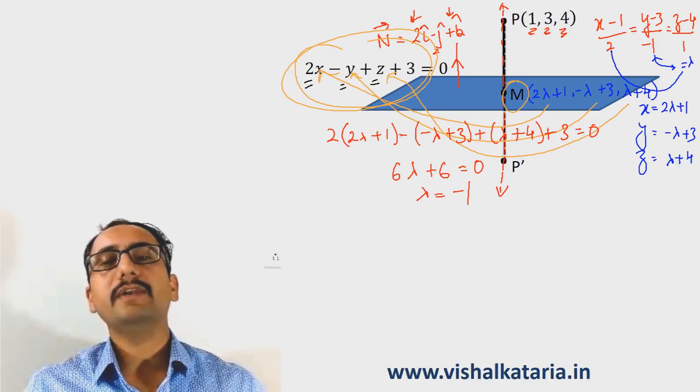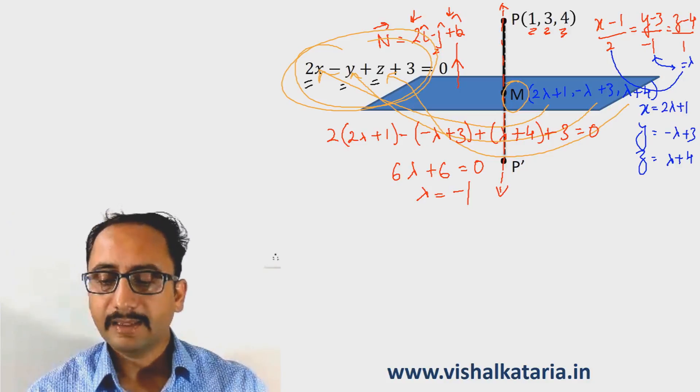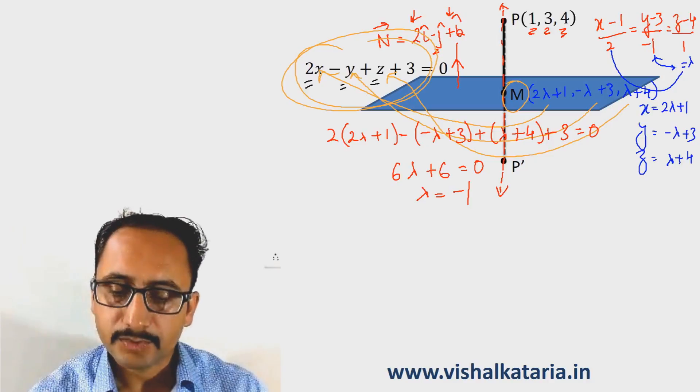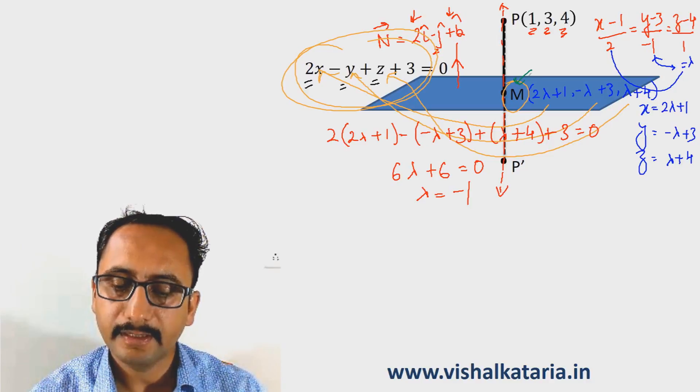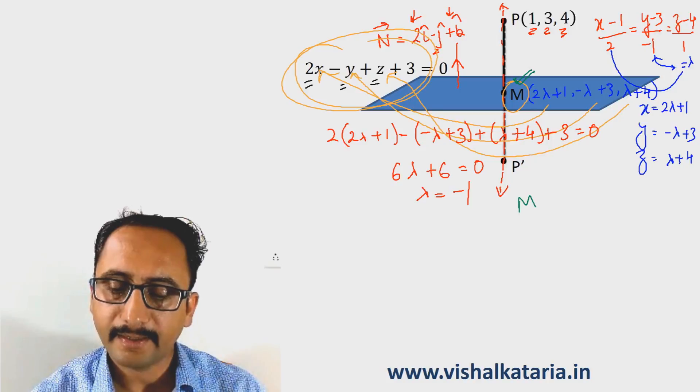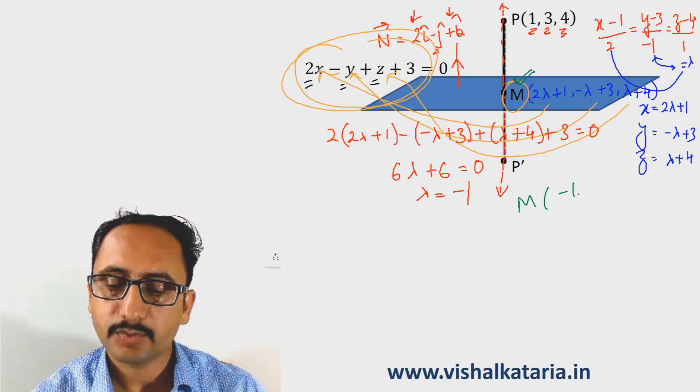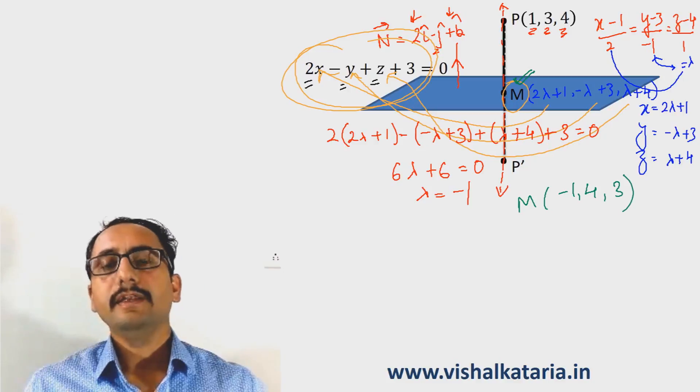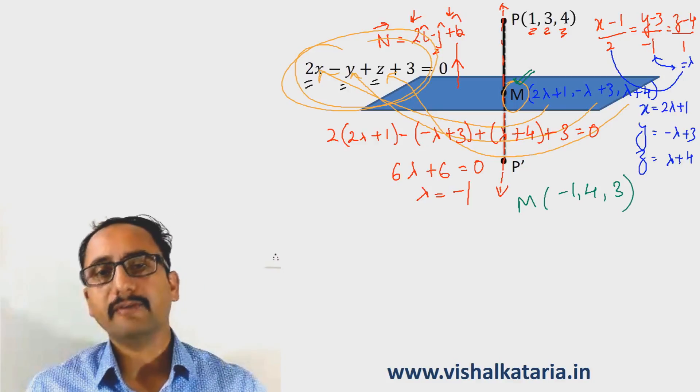Using this value of λ, I can easily get the coordinates of point M. If I put λ = -1, the coordinates of point M will be (-1, 4, 3). Now I have point P and point M.